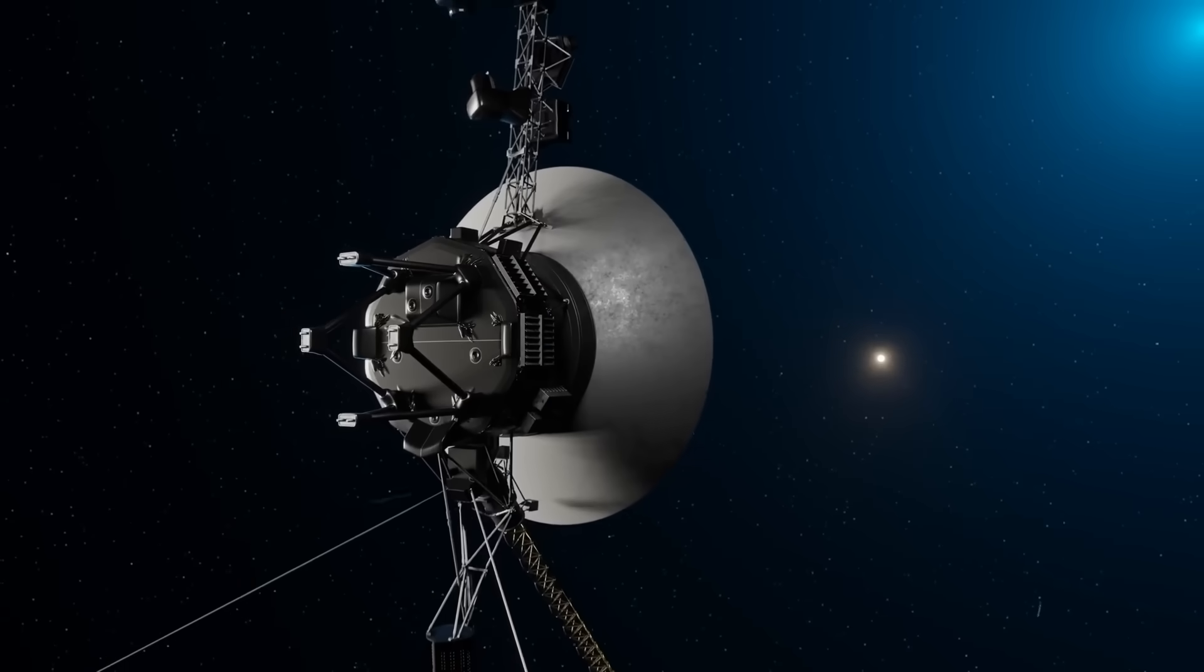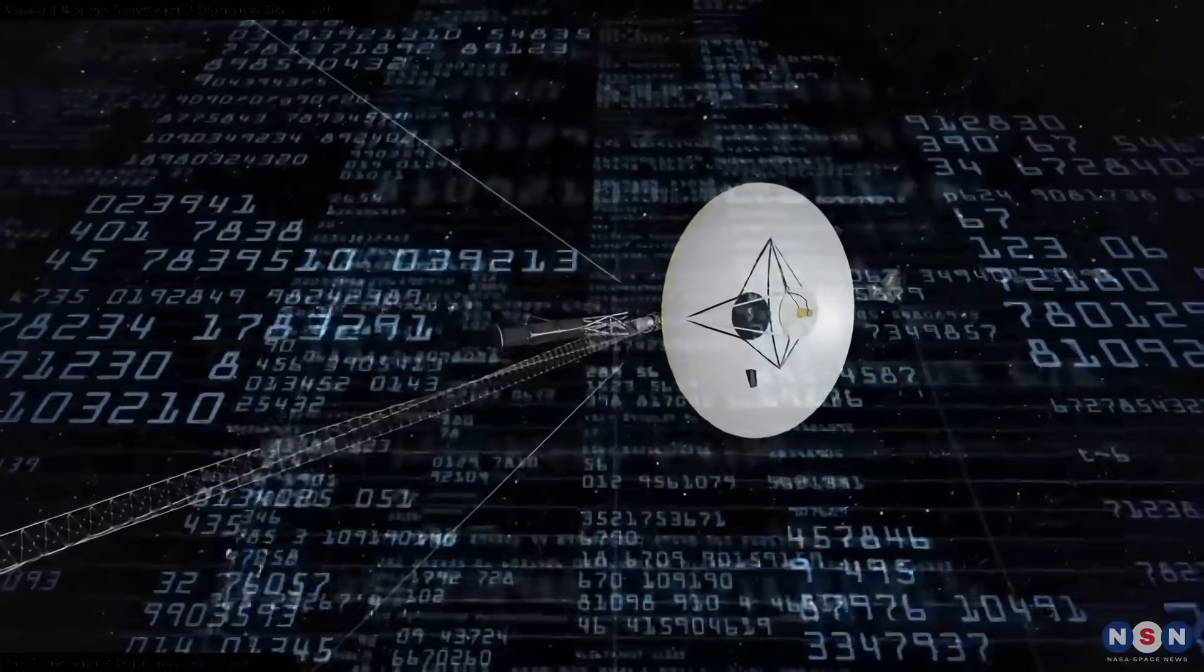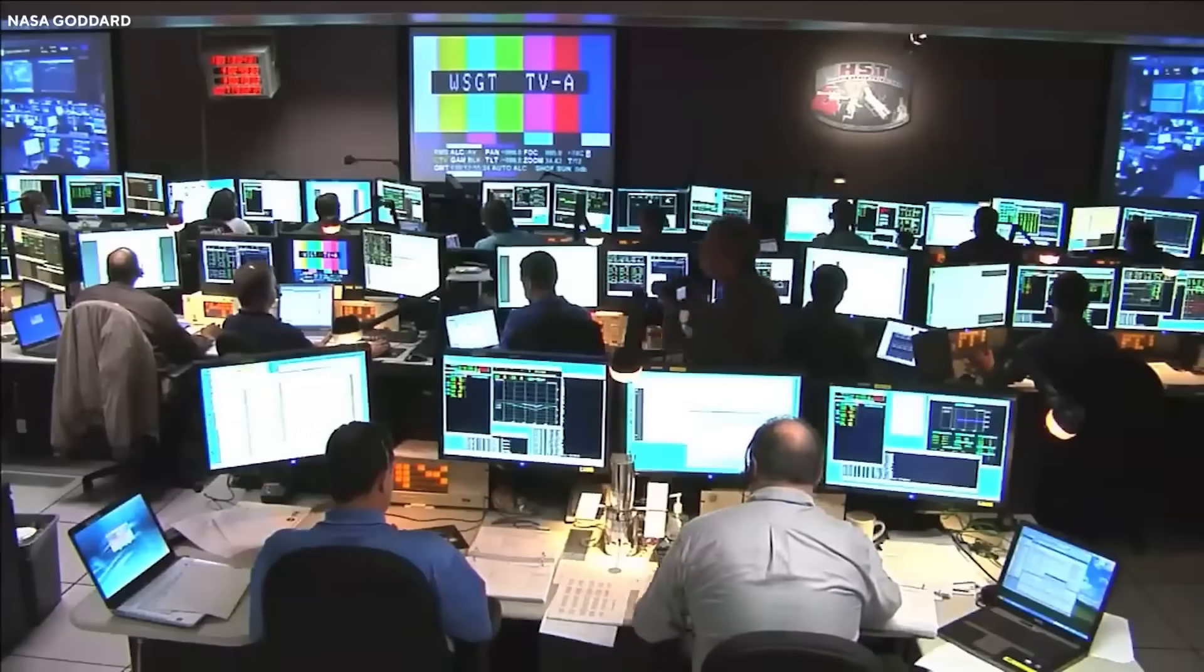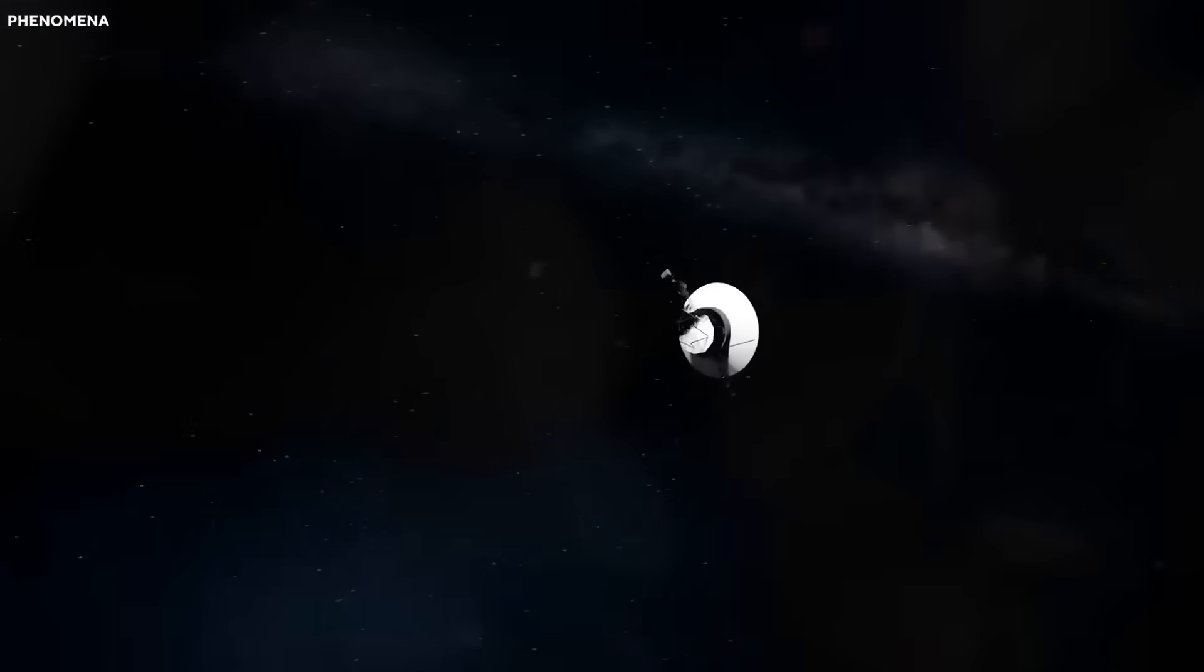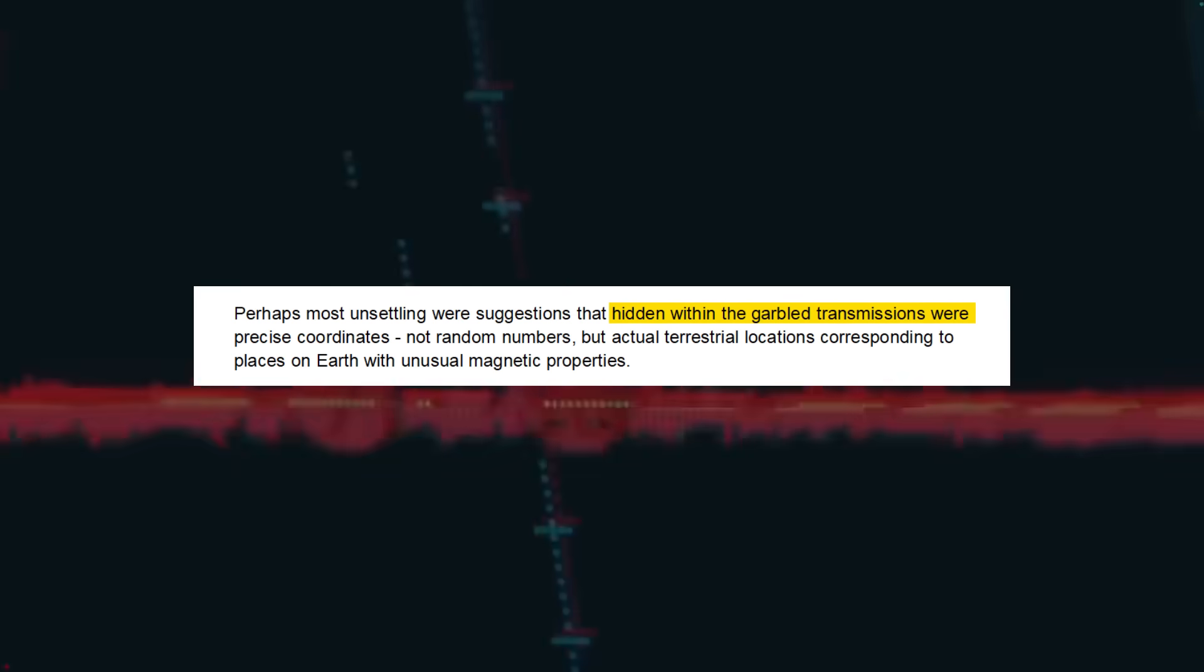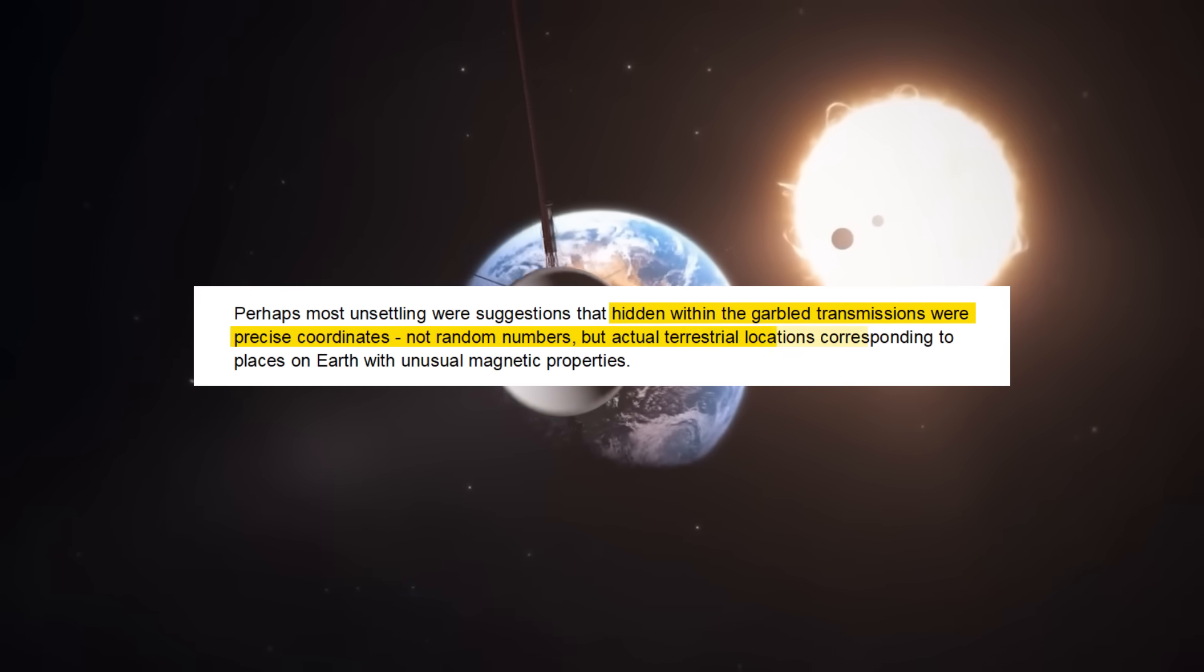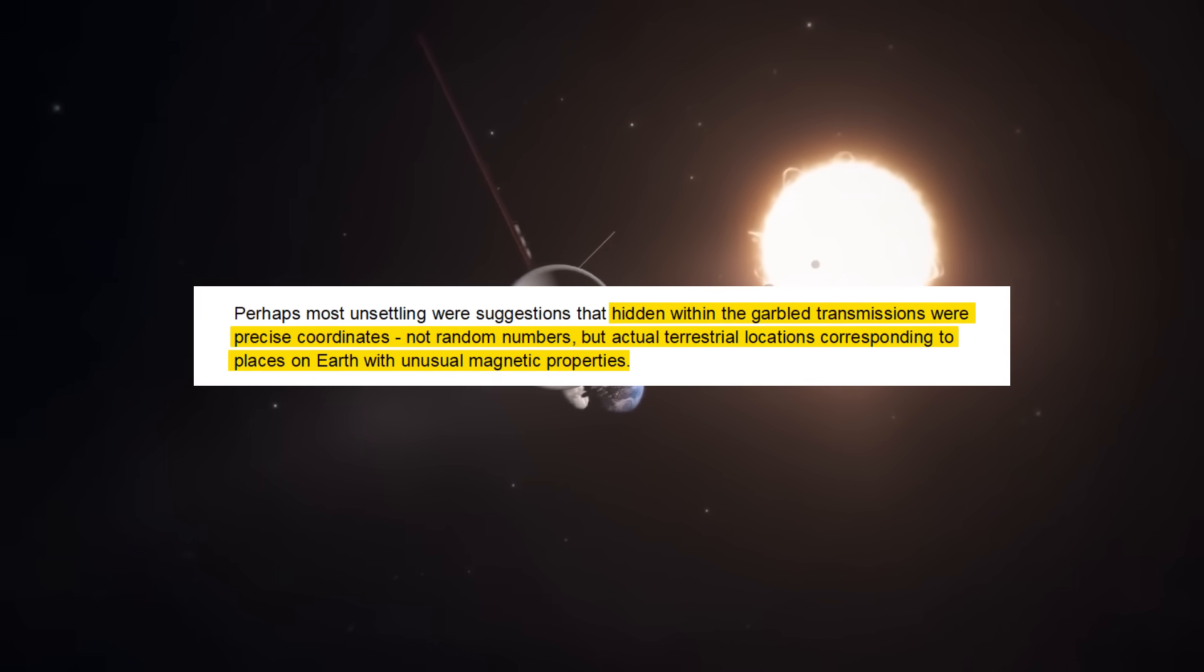Among the strangest viral claims was the idea that a data packet arrived with a time stamp predating its receipt on Earth. As if the information had somehow broken the rules of causality itself, arriving before being sent. This bizarre temporal anomaly has fueled intense debate among those following Voyager's journey. Perhaps most unsettling were suggestions that hidden within the garbled transmissions were precise coordinates. Not random numbers, but actual terrestrial locations corresponding to places on Earth with unusual magnetic properties.